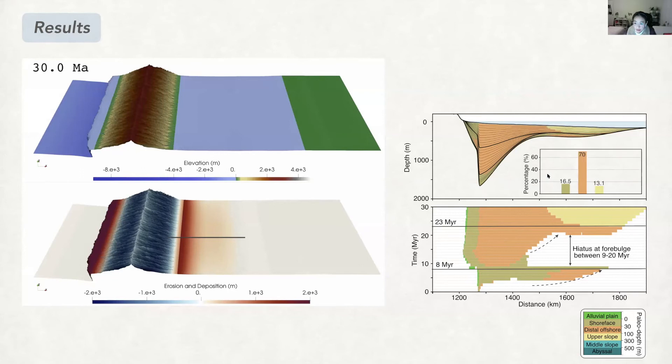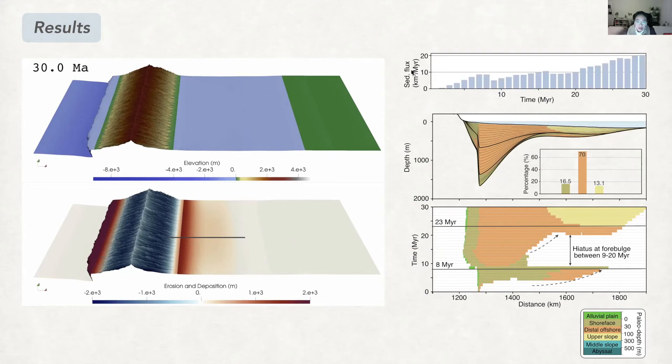By calculating the percentage of the deposition facies, we can see that the deposited sediments are dominated by shallow water deposits. We can also reconstruct the sediment flux history which shows a largely increasing trend.